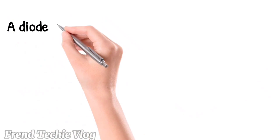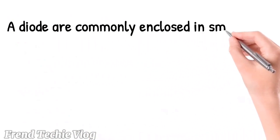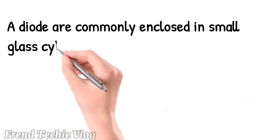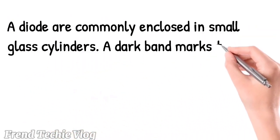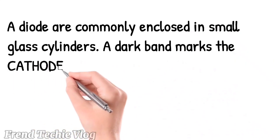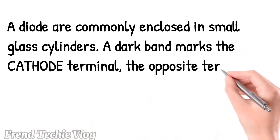Diodes are commonly enclosed in small glass cylinders. A dark band marks the cathode terminal. The opposite terminal is the anode.